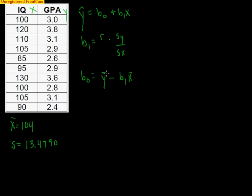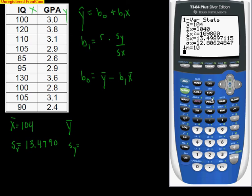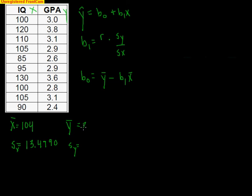We also need the average for the GPA and the standard deviation for the GPA. Once again, we're going to go to our calculator, stat calc, one variable stats for list two. That was where we had the GPA stored. That gives us 3.02 with a standard deviation of 0.4211.